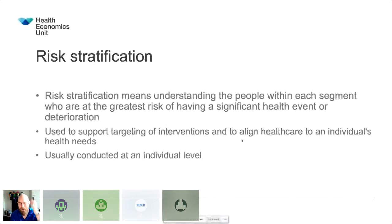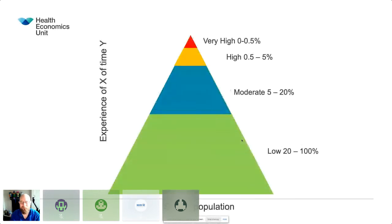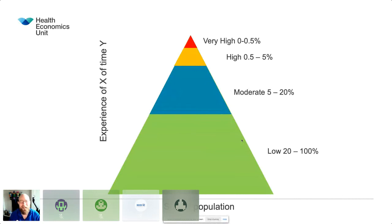If you're my age and you showed an interest in risk stratification back in the 90s, Kaiser Permanente would have wished you over. If you were a boss, you got invited to see the Pima Indians in Arizona or you got to go to San Francisco or California, somewhere nice. And they would talk about the Kaiser pyramid that I'm sure you're very familiar with. The base of the pyramid is the size of your population and as you move up the pyramid, you look at the experience of events over time.